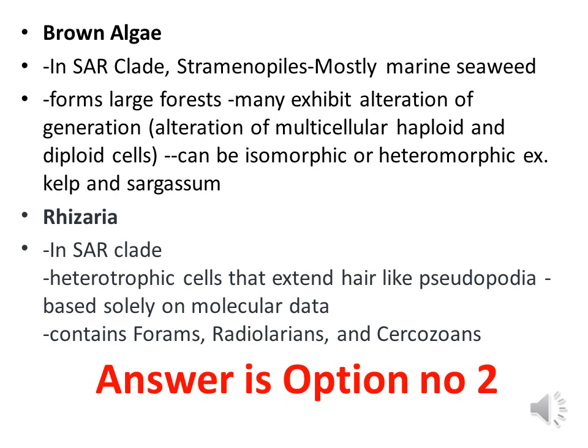The answer is option number 2: brown algae, forams, and radiolarians. The brown algae belong to the clade stramenopiles — usually marine seaweeds that form large forests, exhibiting alternation of generations with both haploid and diploid stages, and can be isomorphic or heteromorphic. Examples include kelp and Sargassum. Rhizaria is another group that belongs to this clade, containing forams, radiolarians, and sarcozonans. All belong to the same clade.